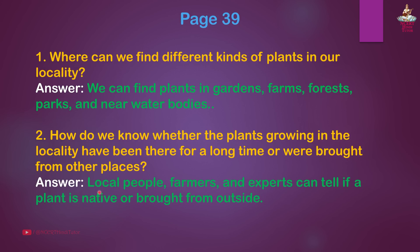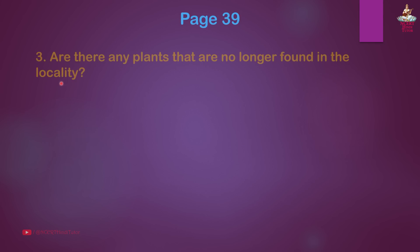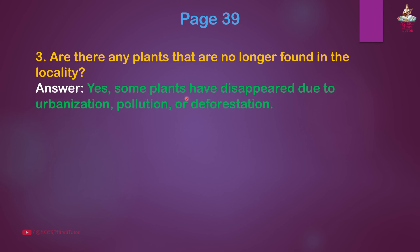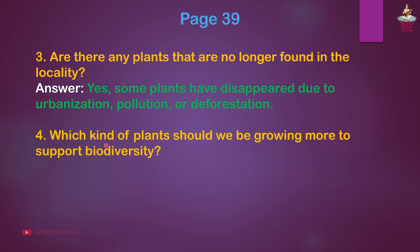Answer: Local people, farmers, and experts can tell if a plant is native or brought from outside. Question 3: Are there any plants that are no longer found in the locality? Answer: Yes, some plants have disappeared due to urbanization, pollution, or deforestation. Question 4: Which kind of plants should we be growing more to support biodiversity?